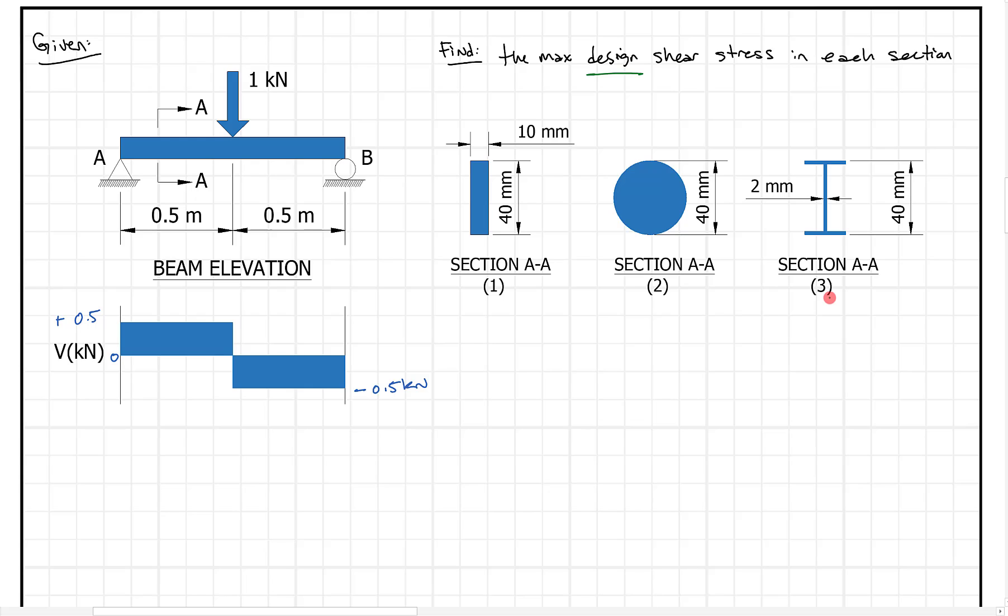So what we can do is go through that and plug some numbers in. The biggest thing is to be consistent with units. So if we're looking at section one, which is the rectangle, what we're going to do is say tau max equals three halves V over A. So in this case, what do we get? We get three halves V.